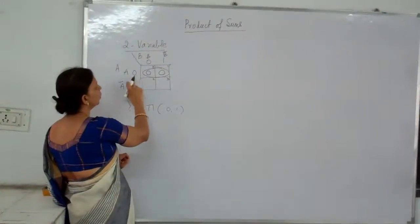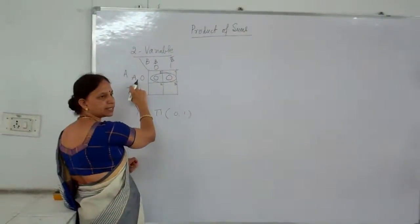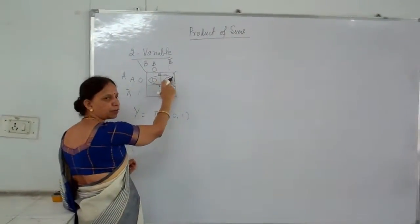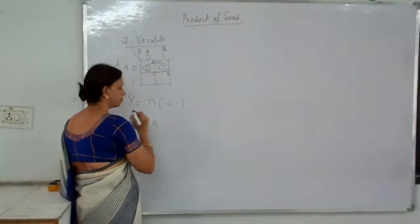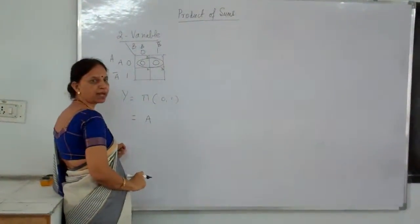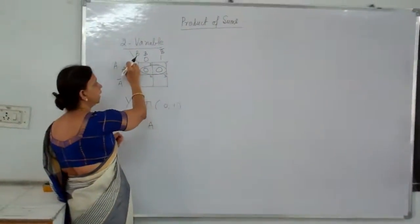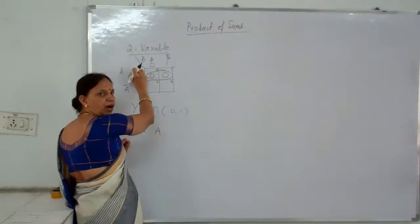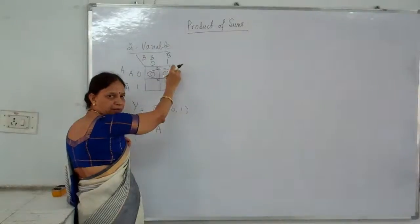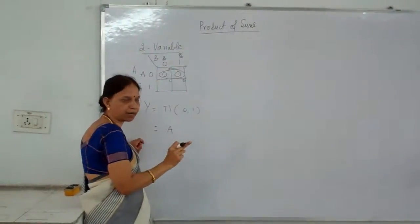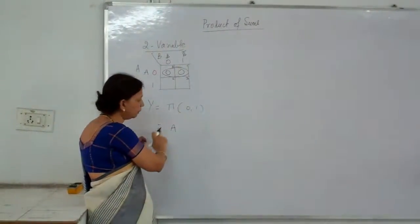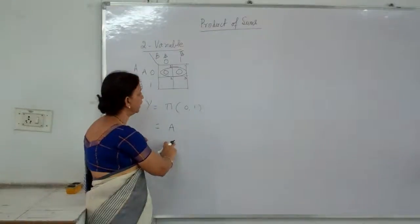Y is equal to — using the same concept — what is constant as we move across? A is constant. So this is A. In the previous method you called it A-bar, but now the complement of this is A.